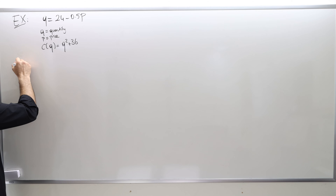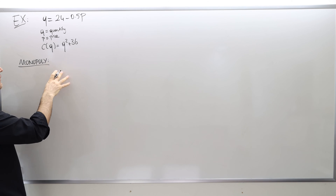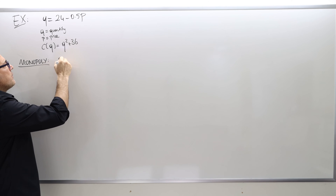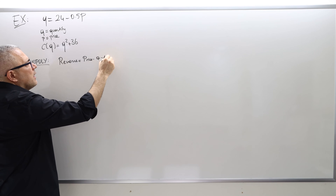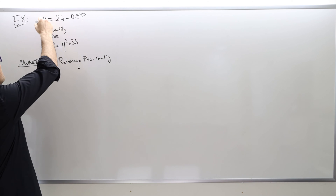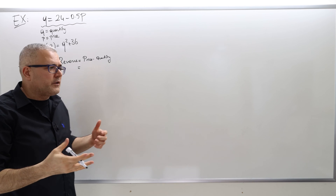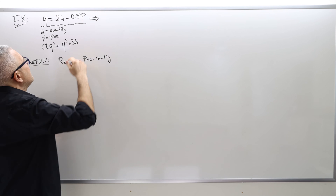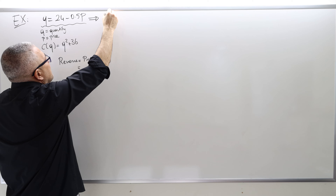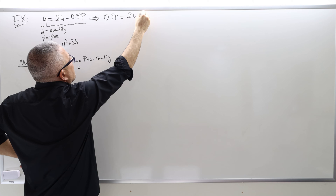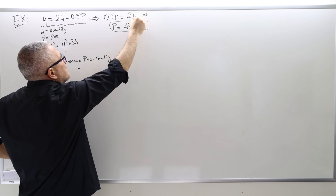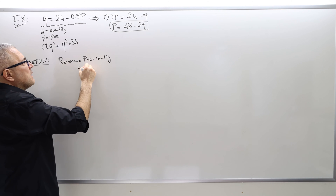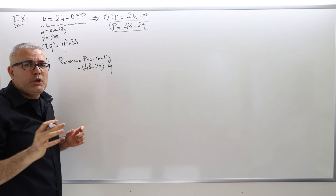Let's look at the monopoly case first. To find the profit-maximizing quantity and price, first calculate revenue — revenue is always price times quantity. The demand curve given is not in inverse form, so I'll convert it: taking P on one side gives P equals 48 minus 2Q. That's the inverse demand curve. So whenever I see price, I plug in the inverse demand curve, times quantity Q.